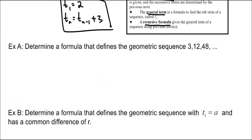Determine a formula that defines the geometric sequence 3, 12, 48. We can see that when we divide, 12 divided by 3 is 4, 48 divided by 12 is 4. So the common ratio is 4, and our first term is 3. If we want to use the recursive formula, T sub 1 equals 3, and every other term is 4 times the previous term, so 4 times T sub n minus 1.